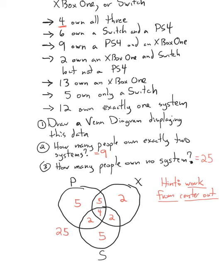For problems like this, it's always a good idea to work from as close to the center out as you can. These clues were arranged quite nicely, with ones talking about all three first, then two, then just one. But in other problems, it might not be in a nice order — it'll be all mixed up. So you have to go through and say: first, look for the ones that talk about the center, do that, then look for the ones that talk about two of them, and then look for the ones that talk about only one of them. That's how these problems work.